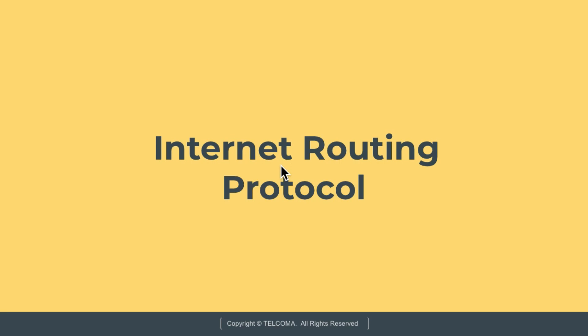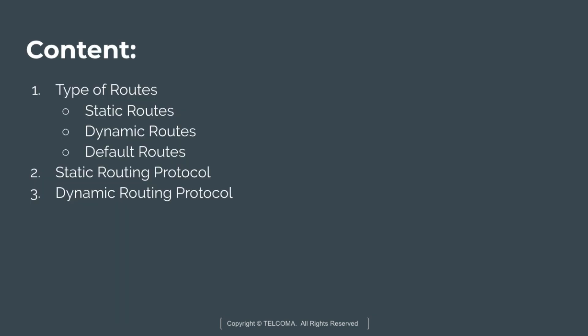Hello, welcome to the course of computer networks. Today we are going to discuss about the internet routing protocol. In this chapter we will discuss about various things, starting with the types of routes like static route, dynamic route, and default route, after that the static routing protocol and the dynamic routing protocol.